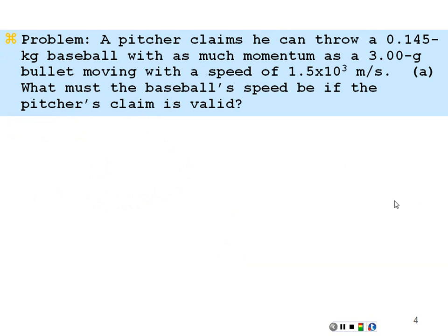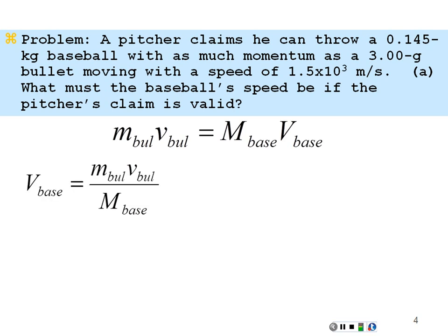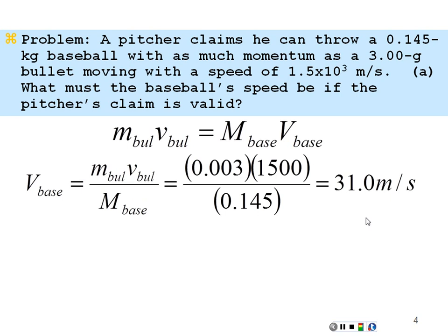A pitcher claims he can throw a 0.145-kilogram baseball with as much momentum as a 3-gram bullet moving at 1.5 × 10³ meters per second. For that to be true, the momenta must be equal: mass times velocity of the bullet equals mass times velocity of the baseball. The required baseball speed is (0.003 kg × 1500 m/s) / 0.145 kg = 31.0 meters per second.